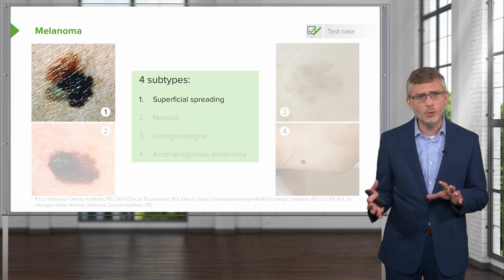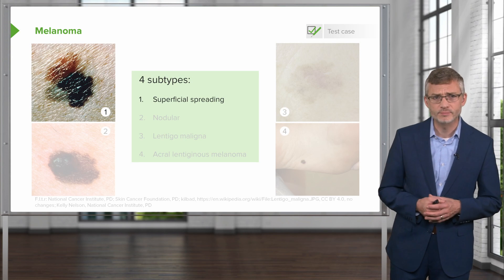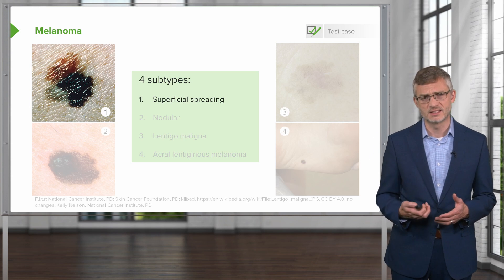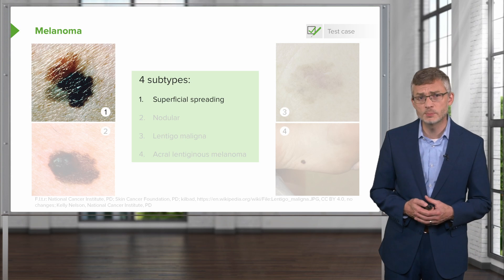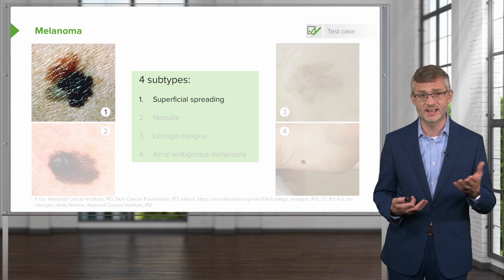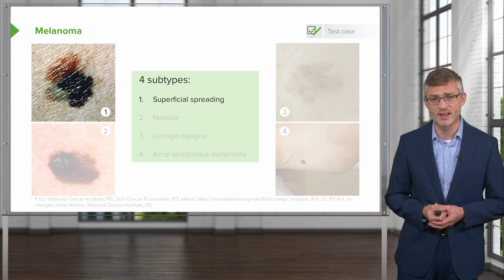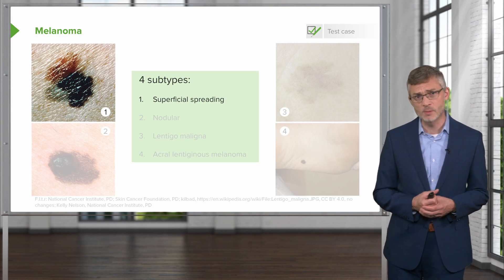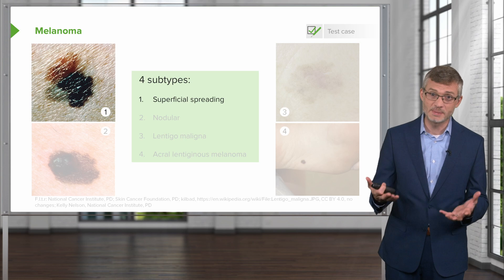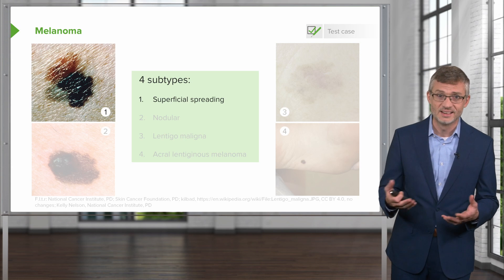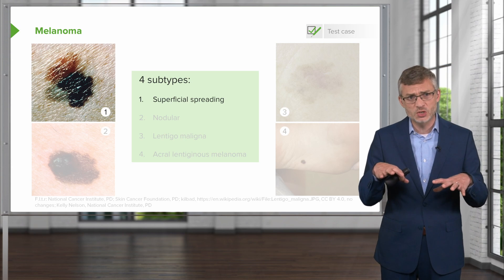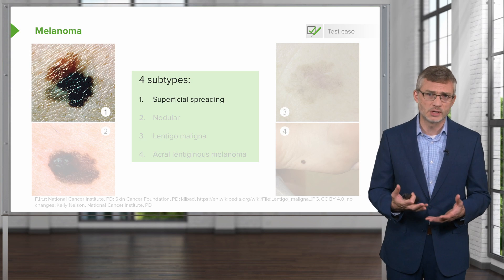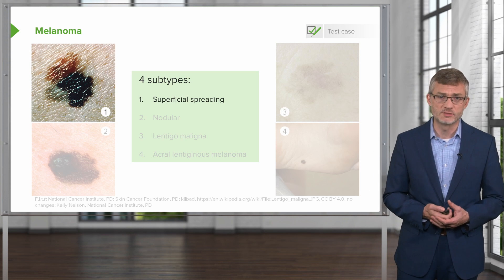There are actually four different subtypes of melanoma. The most common, about 70% of cases, is called superficial spreading melanoma, depicted here on the top left. Importantly, superficial spreading melanoma — as melanoma goes — is the best one you could get. Since it is fairly superficial, it can be readily removed. It's the most treatable of all the different types of melanoma.